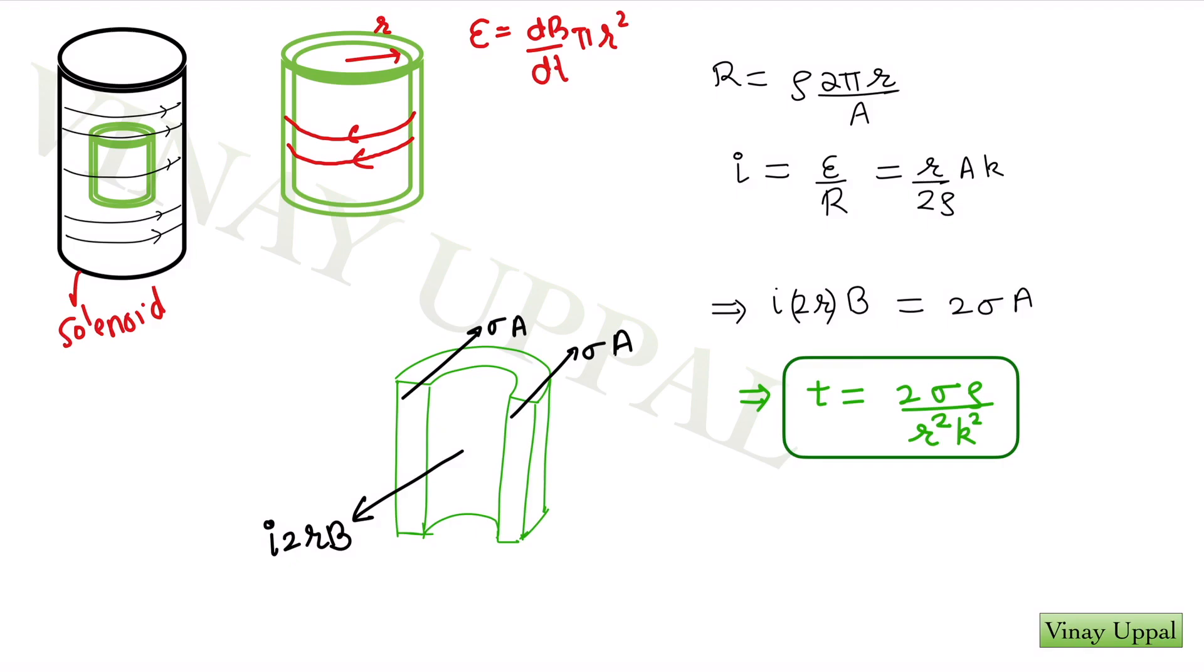Due to Lenz's law, you can see that since magnetic field of the solenoid is increasing in this direction, this will be the direction of the magnetic field. Because magnetic field is increasing with time, the current induced in the can will tend to oppose this change and therefore the current induced will be in the opposite sense as compared to the solenoid.